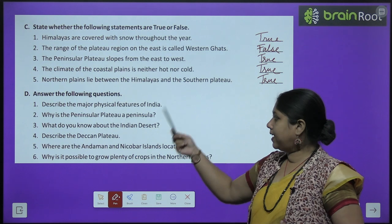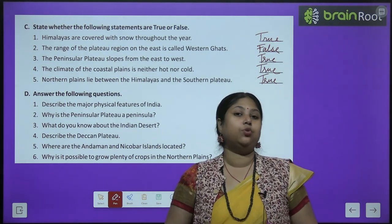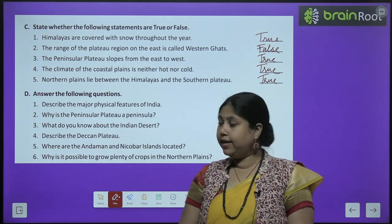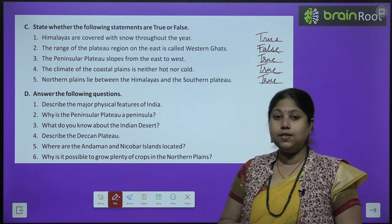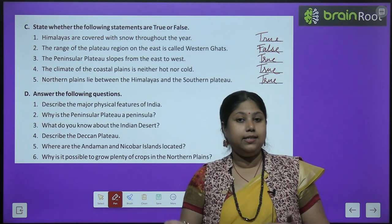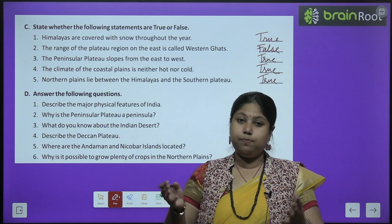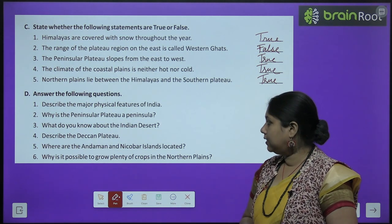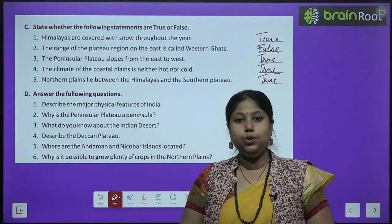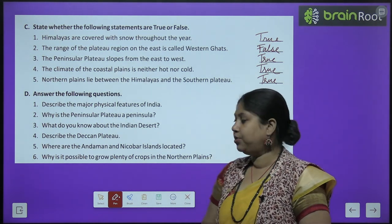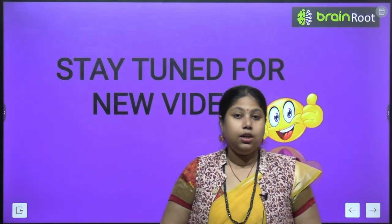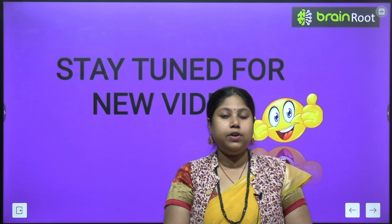Children, next we have exercise D — answer the following questions. This is something to be done on your own. Chaaptr mein se aapko answer dhundna hai. Major physical features include: Northern Plains, Northern Himalayan mountains, desert, coastal plains, islands, plateaus — toh yeh saare aapko khud likhne hain. With this we come to an end to today's session. I hope you have enjoyed the session and understood the different physical features of India.